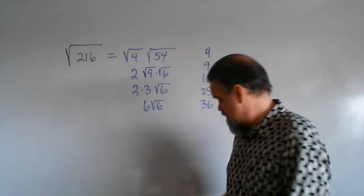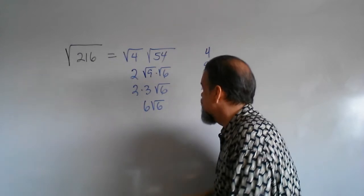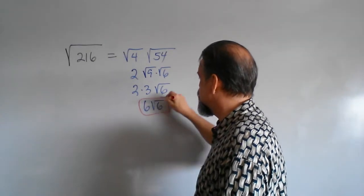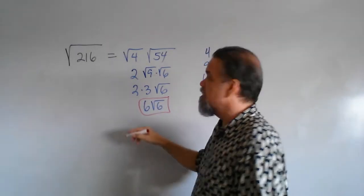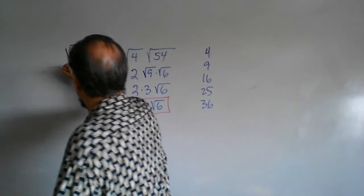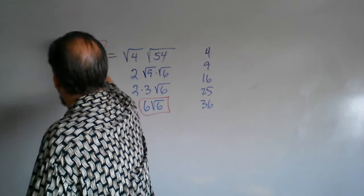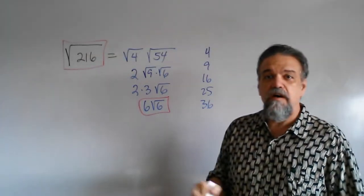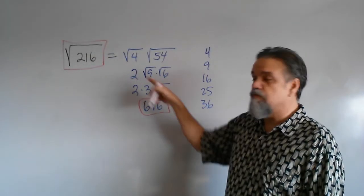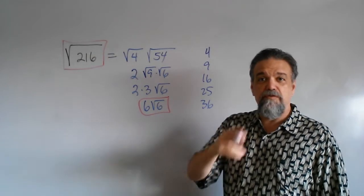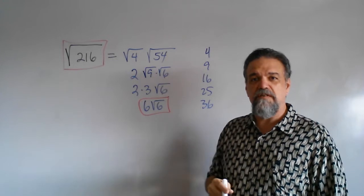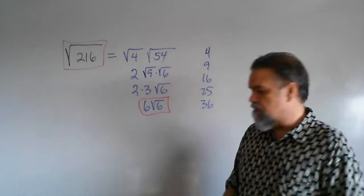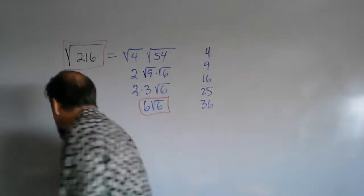What does that mean? It means that 6 times the square root of 6 is the square root of 216. Do them both on a calculator and you'll see you get the exact same answer. So that's all fine and good.